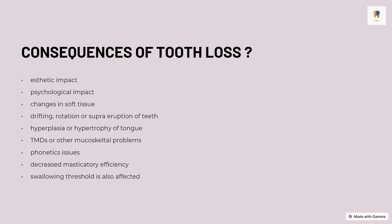Patients constantly think about not looking good. There are also changes in soft tissue — there can be drifting, rotation, or supra-eruption of teeth. There can be hyperplasia or hypertrophy of the tongue, and there can be TMD or musculoskeletal problems in patients who have tooth loss.